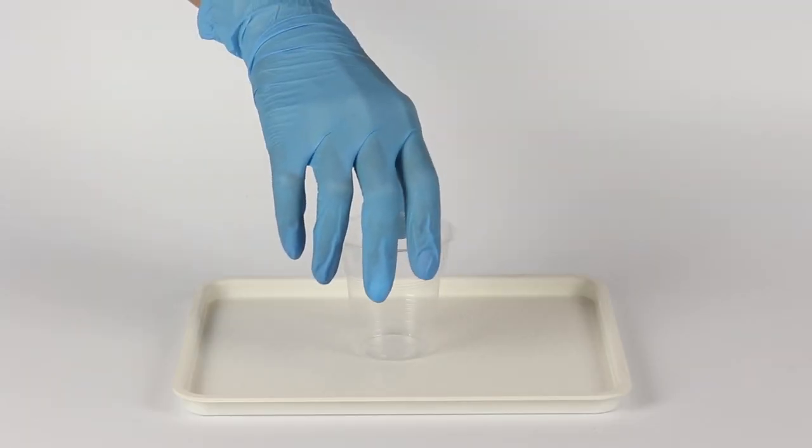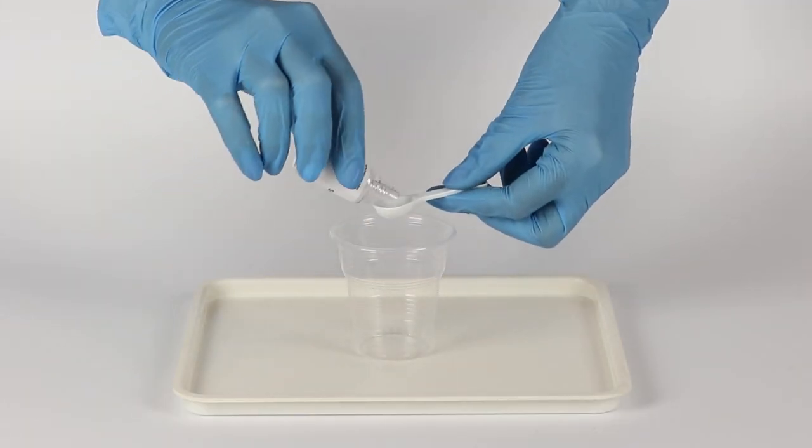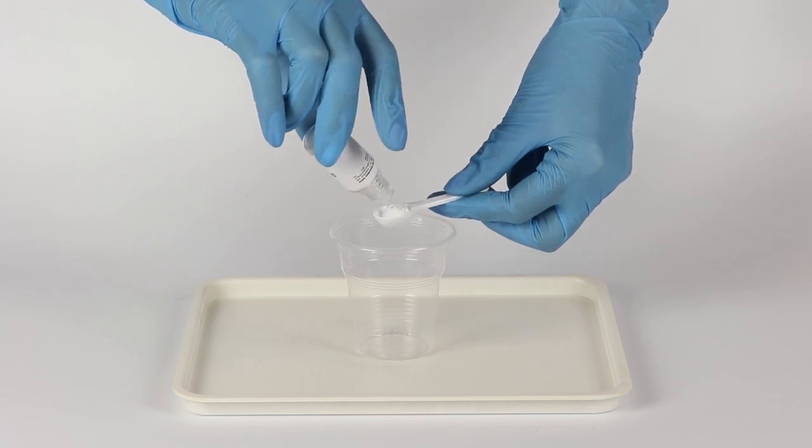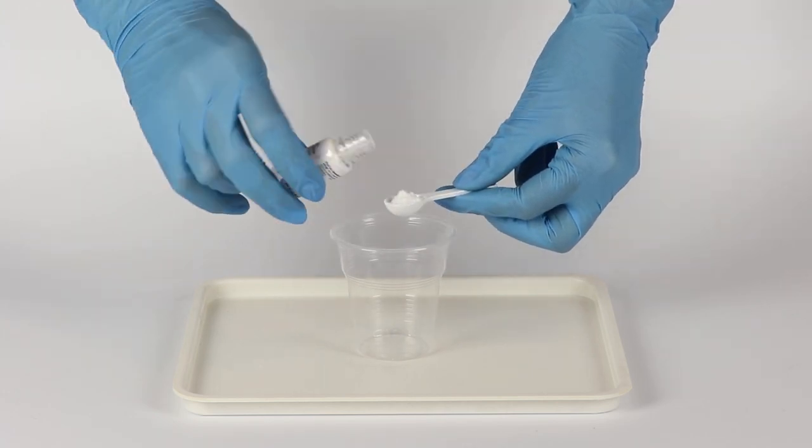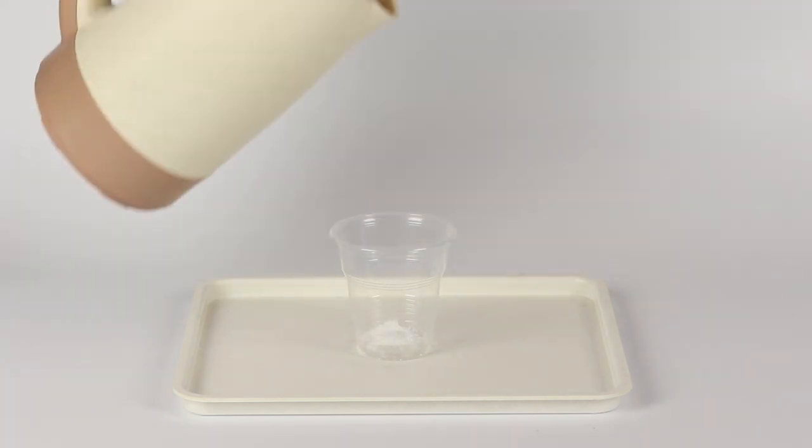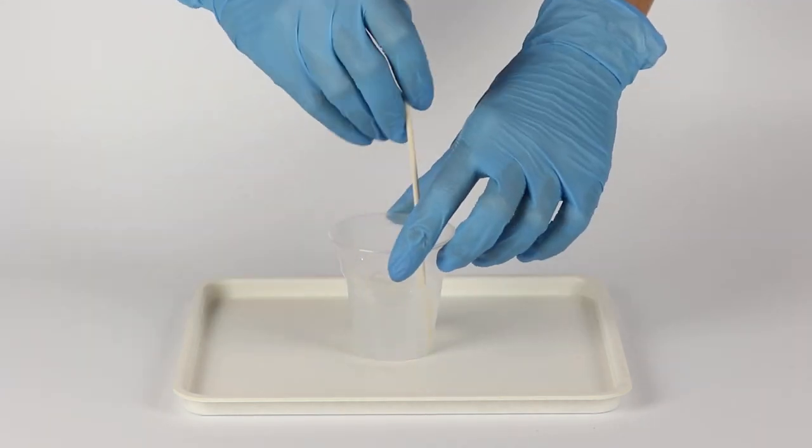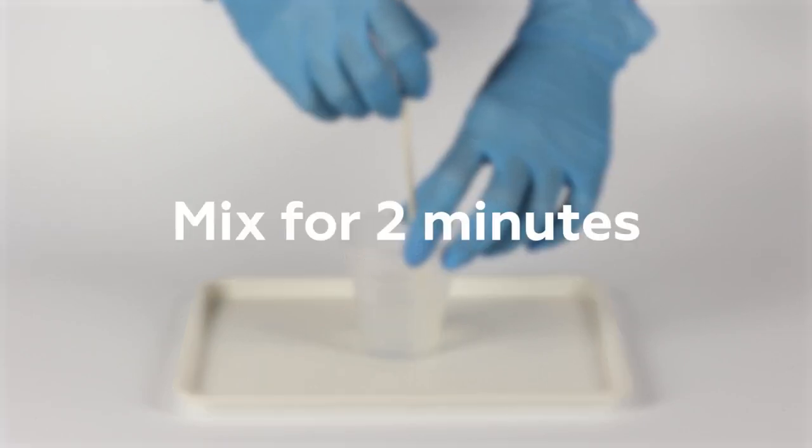First, prepare a starch solution. This will act as an iodine indicator. Measure one big spoonful of starch into a plastic cup. Fill the cup halfway with boiling water. Mix for two minutes using a wooden stick.